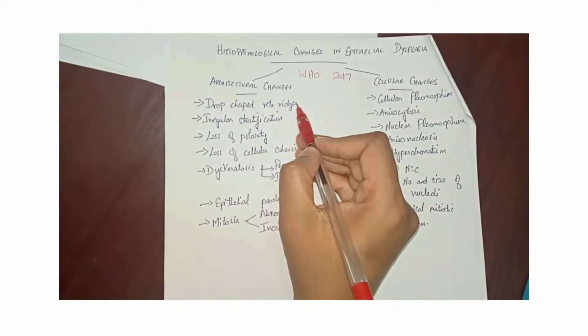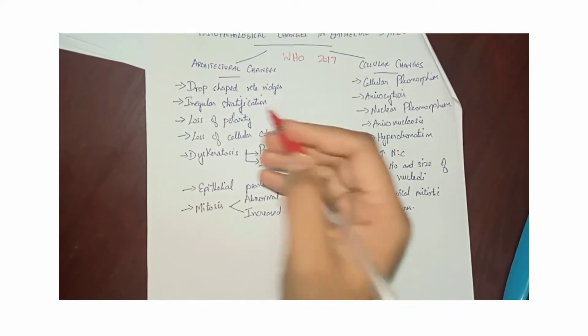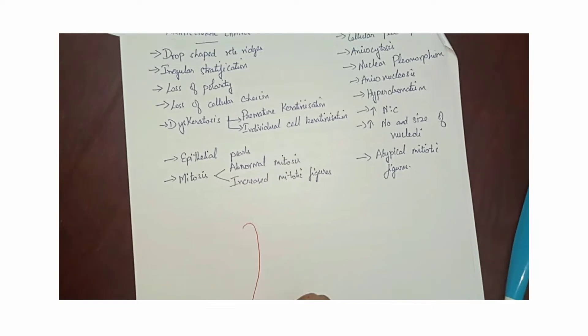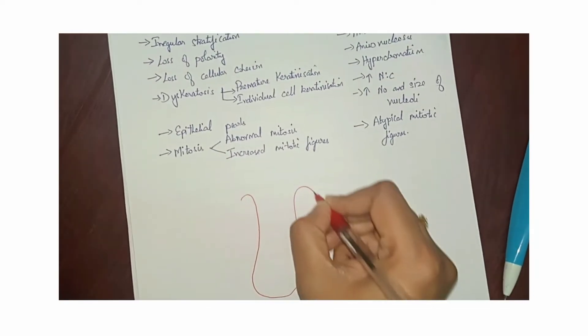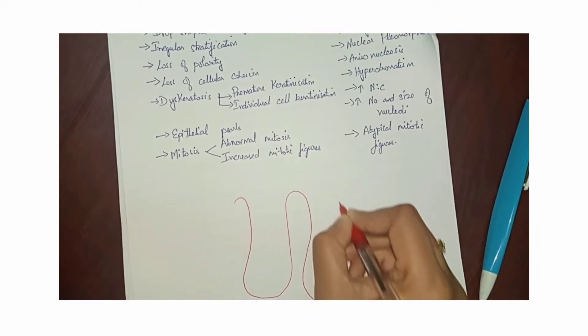First let us see the architectural changes one by one. First one is the drop shaped reti ridges, which is otherwise called as the bulbous reti ridges.